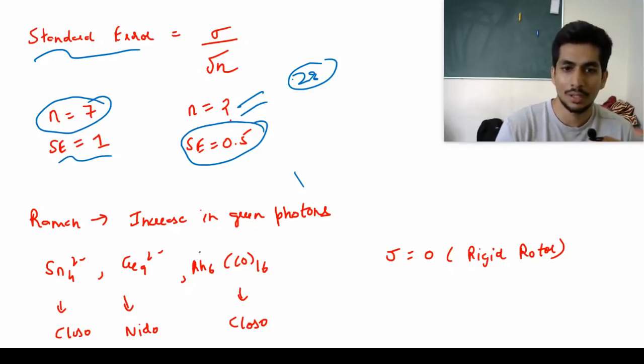In Raman there was a very conceptual question. The answer was that the number of green photons are going to increase - you will see an increase in the number of green photons. Then there was a typical question from polyhedral electron pair theory. This was closo - this was nido germanium complex - and Rh6(CO)60 was closo again.